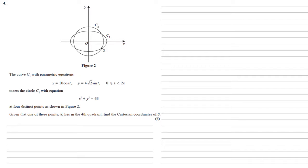The curve C1 with parametric equations x equals 10 cos t, y equals 4 root 2 sin t, meets the circle C2 with equation x squared plus y squared equals 66.